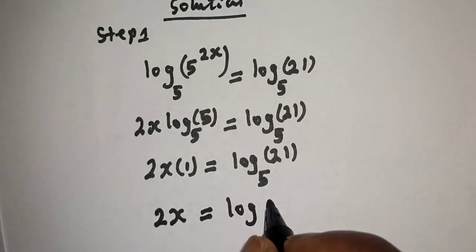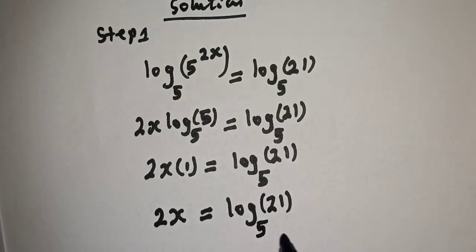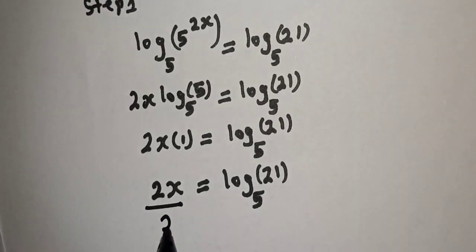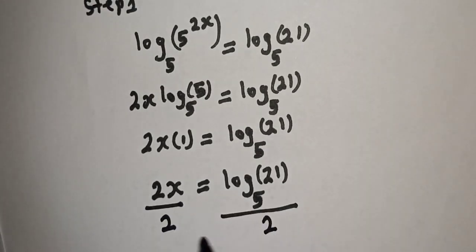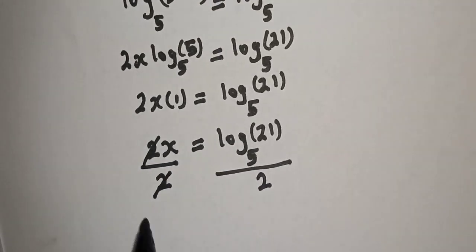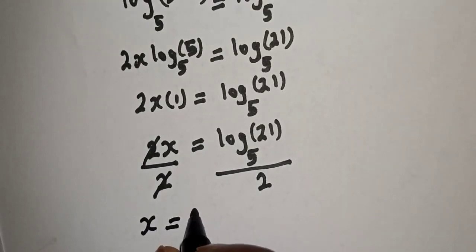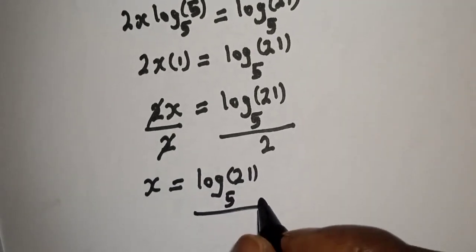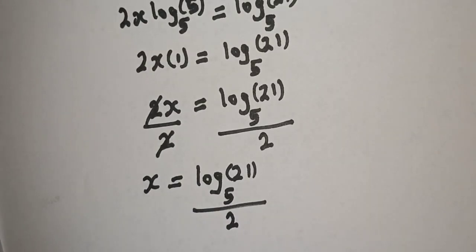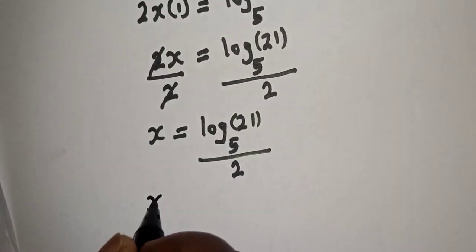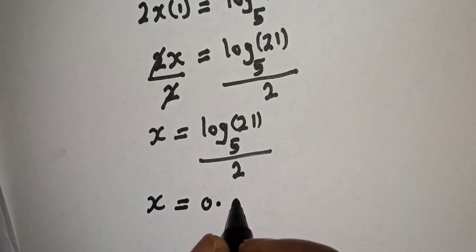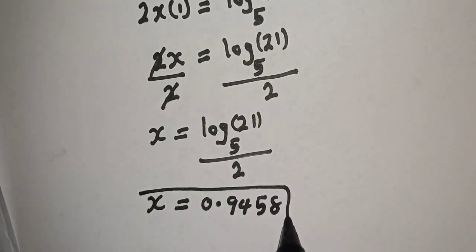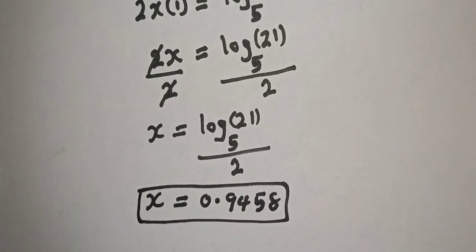2x is equal to log 21 base 5. Now we are looking for the value of x, so let's divide both sides of the equation by 2. This will cancel, and x is equal to log 21 base 5 over 2, which equals 0.9458. This is the final answer for step one.